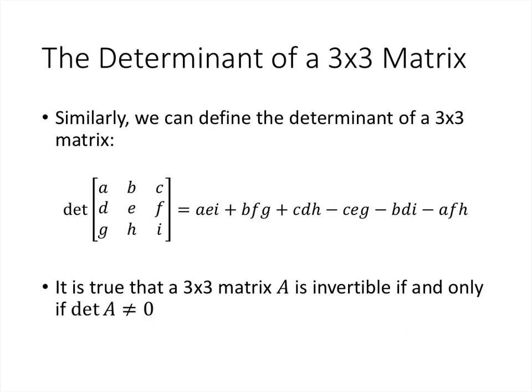That's a useful thing we'd like to have for larger matrices, and it does turn out that we can find determinants of larger matrices. The determinant of a 3x3 matrix is a formula you can see here, and again that matrix is invertible if and only if that calculation turns out to not be 0. AD minus BC is pretty easy to remember, but this 3x3 formula looks much more difficult, and you can imagine how much more complicated it gets for 4x4, 5x5, and so on. So we're going to find a different way to think about how we compute the determinant rather than memorizing a gigantic formula.